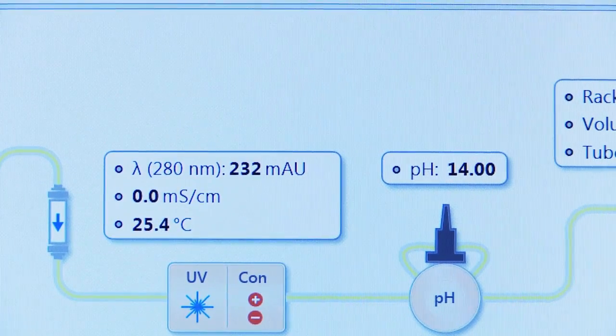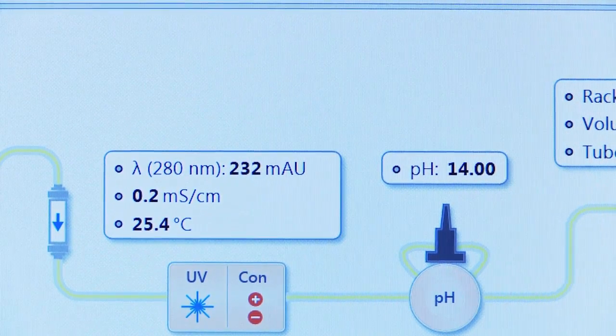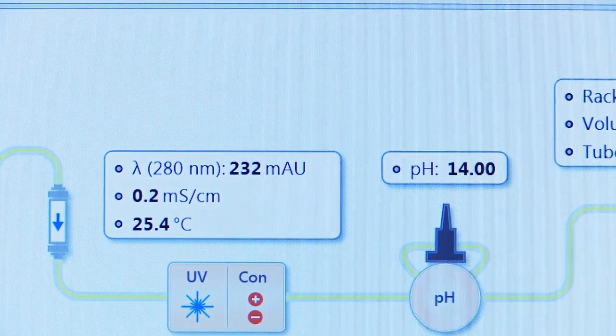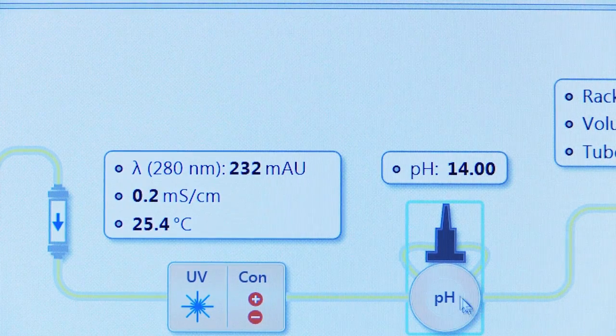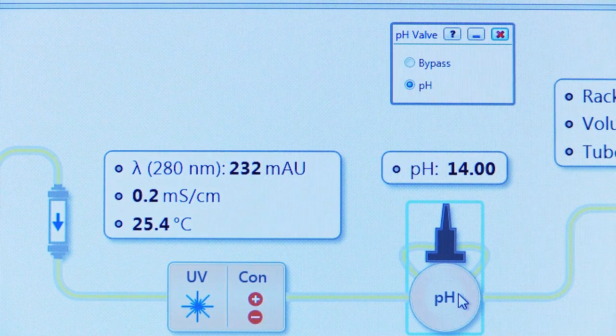You can also use manual mode to verify successful installation. Double-click the pH valve icon in the Fluidic scheme. This opens the software faceplate for the pH valve.